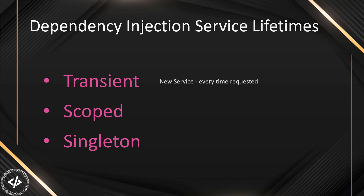To give you a quick recap: transient means a new service is created every single time. For scoped, a new service will be created once per request. And for singleton, a new service will be created once per application lifetime. Scoped is one of the most recommended approaches for web applications because a service will be created on each request. But even with this overview, things might be a little complicated, so let me explain with a real world example.